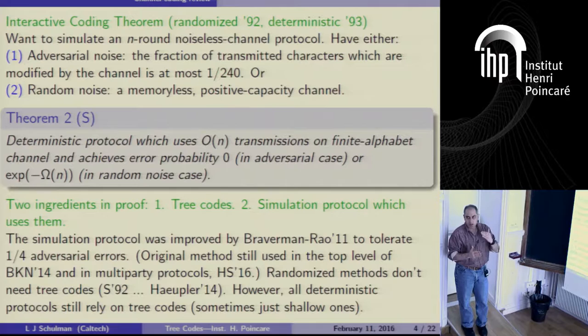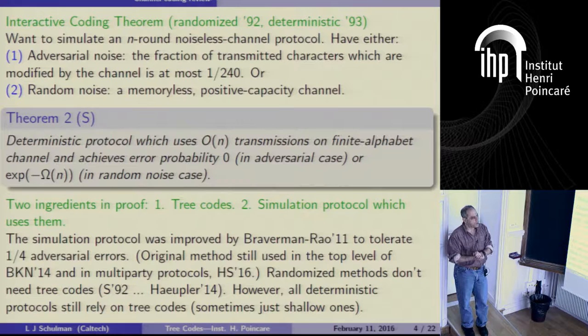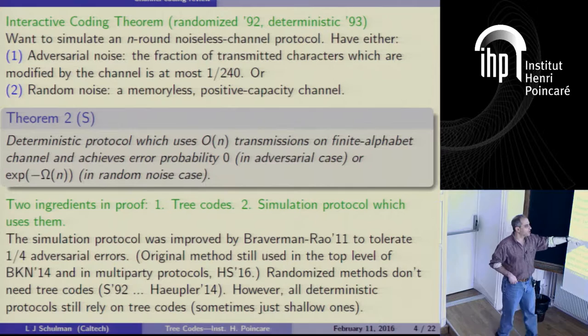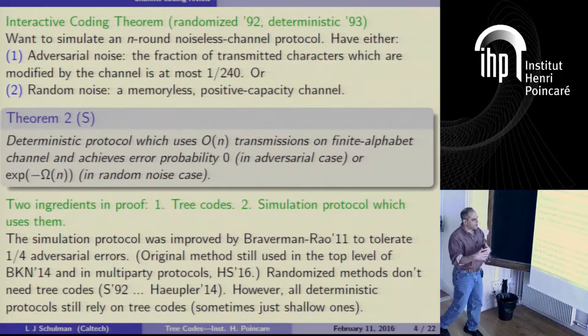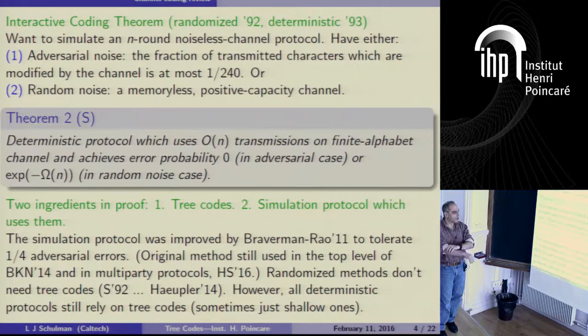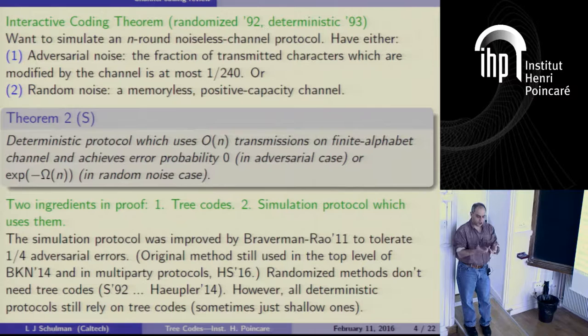The hashing and checkpointing approach requires randomization. If you want to do things deterministically — which is really going to be the focus and motivation now — then we ultimately rely on tree codes one way or another. Tree codes were introduced in the first solution to this problem, in conjunction with a particular simulation protocol, which those at Yael's talk yesterday saw used at the top level.